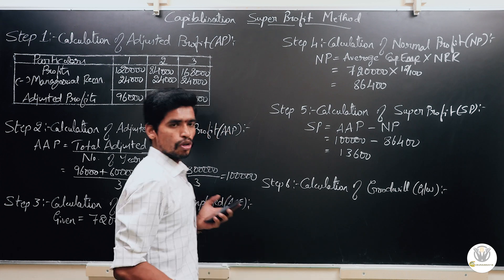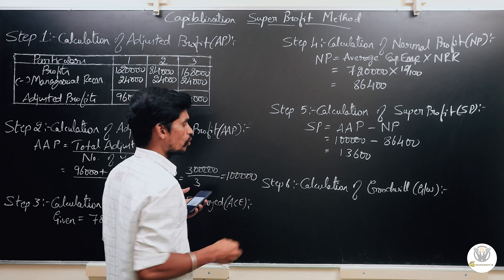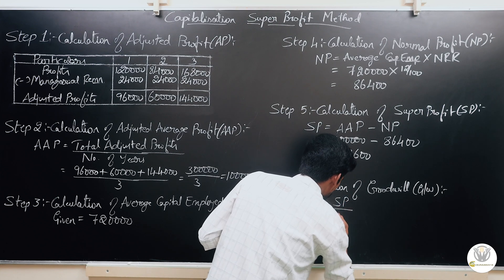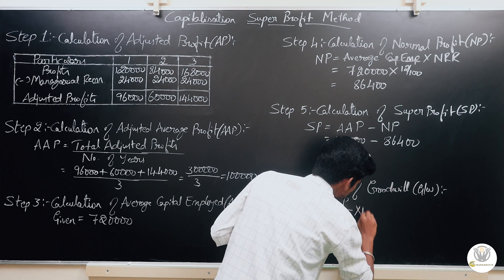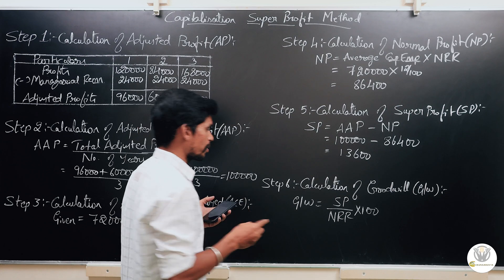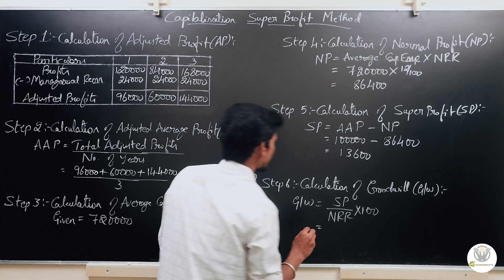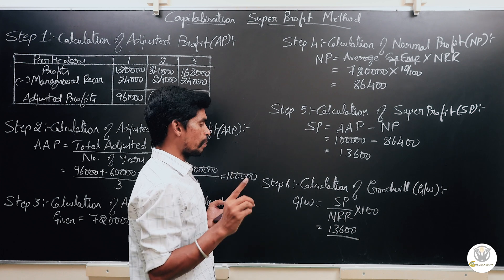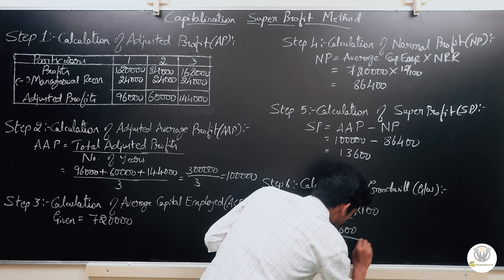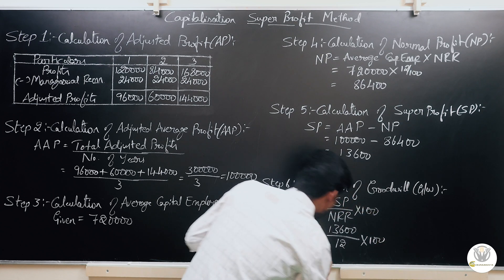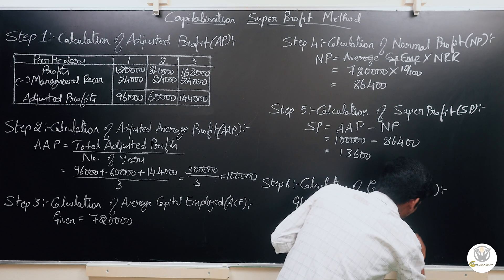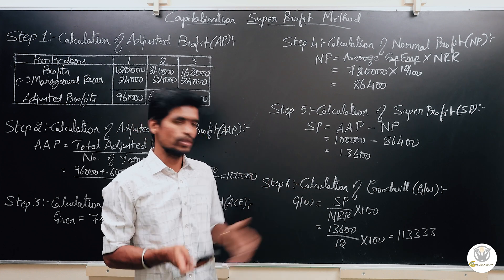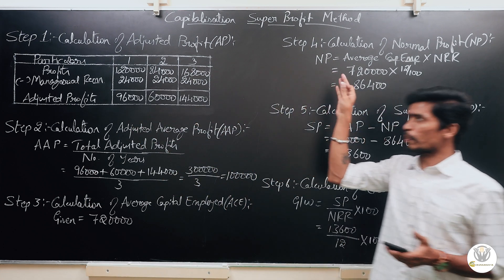Step 6: Calculation of goodwill using the capitalization super profit method. The formula is: Goodwill equals super profit divided by normal rate of return, multiplied by 100. Super profit is Rs. 13,600 divided by 12, multiplied by 100. Therefore, goodwill value is Rs. 1,13,333.